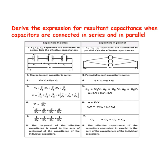The effective capacitance of capacitors connected in parallel is the sum of the capacitance of the individual capacitors. This is the difference between capacitors in series and capacitors in parallel.